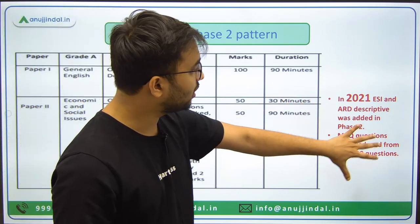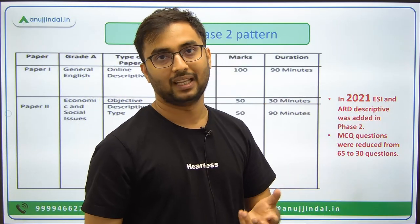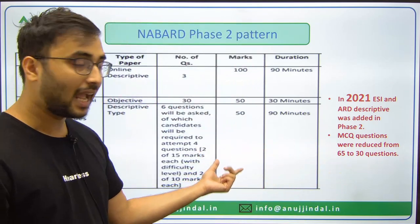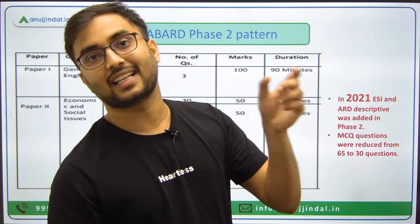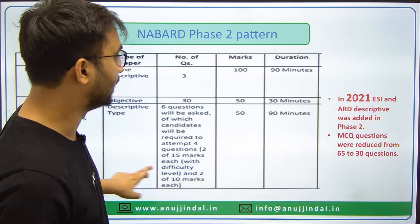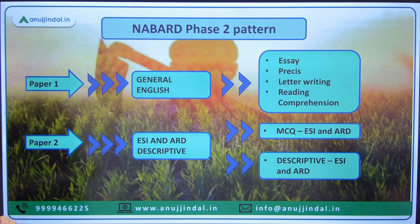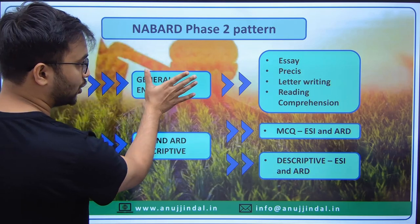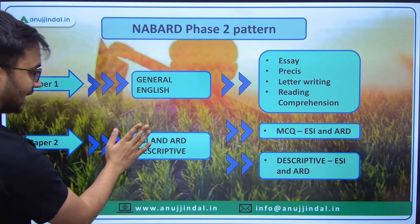The total change in exam pattern from 2021 was simple: ESI and ARD descriptive answer writing was added, and the MCQs which were previously 65 in number were reduced to 30. Overall, Paper 1 covers General English with Essay, Precis, Letter, and Reading Comprehension. Paper 2 covers ESI and ARD with both MCQs and descriptive.